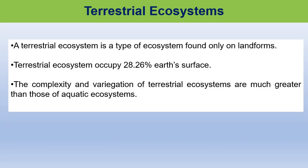Now let us discuss about terrestrial ecosystem. A terrestrial ecosystem is a land-based community of organisms and the interactions of biotic and abiotic components in a given area. Terrestrial ecosystems occupy 28.26%, that is about one-fourth of the surface of the earth. The complexities of the terrestrial ecosystem are much greater than those of aquatic ecosystems. The type of terrestrial ecosystem found in a particular place is dependent on the temperature range, the average amount of precipitation received, the soil types, and amount of light it receives.